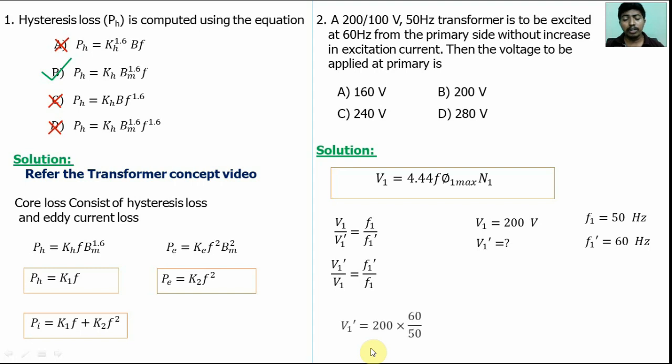Substitute these values. V1' = V1 × F1'/F1. V1 = 200 volts, F1' = 60 Hz, F1 = 50 Hz. Simply with this equation, we will get the answer as 240 volts. So option C is right.